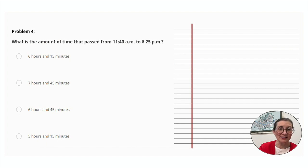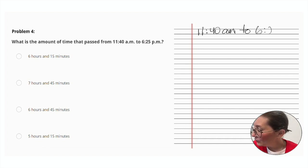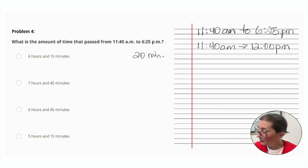What is the amount of time that passed from 11:40 AM to 6:25 PM? All right. Let's do this the simplest way possible. We'll start with 11:40 AM and we're going to work to 12 PM. And that is a total of 20 minutes.